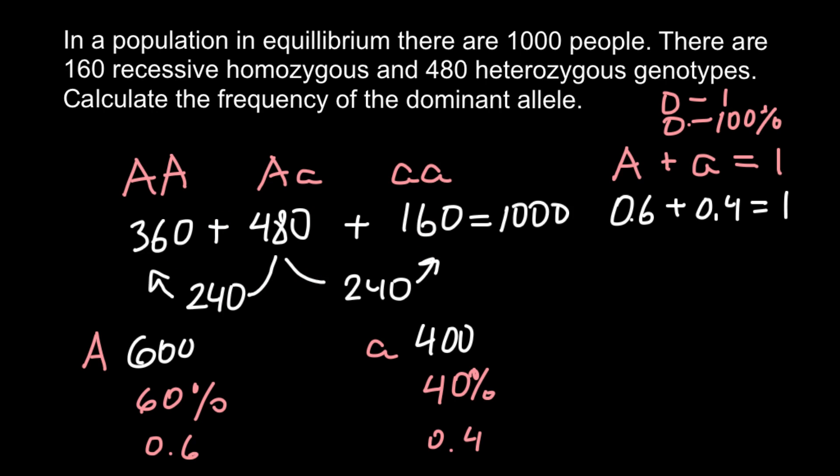So basically we do all the same calculations. We just double all the numbers. But this doesn't affect our calculations. We still would get 60% here and 40% here. There are two ways how we can solve this problem, but the answer still would be the same.